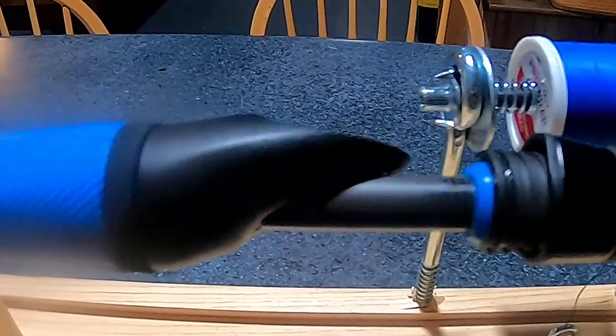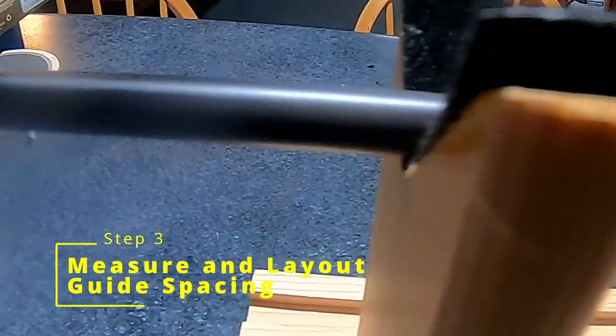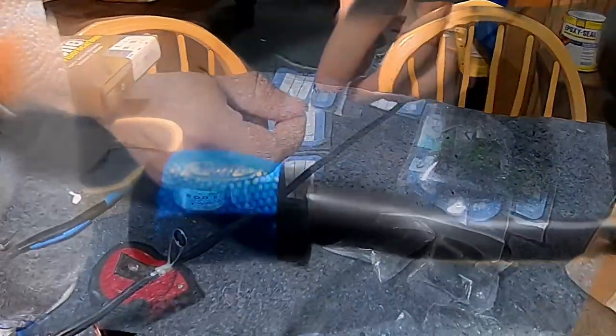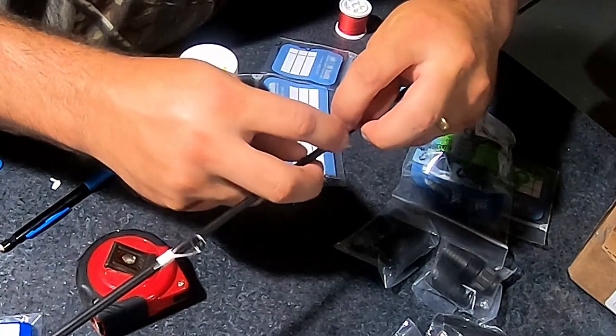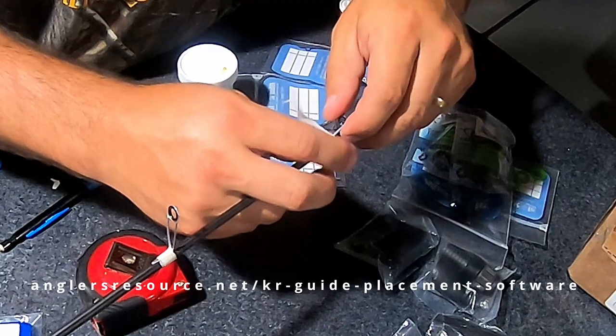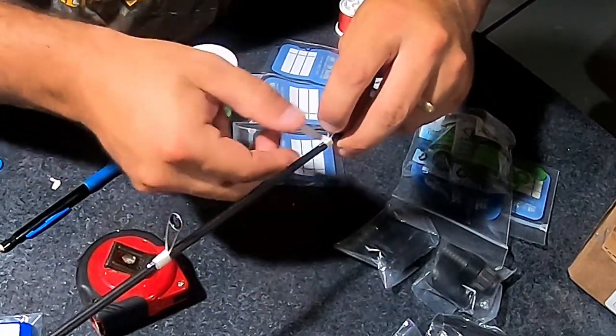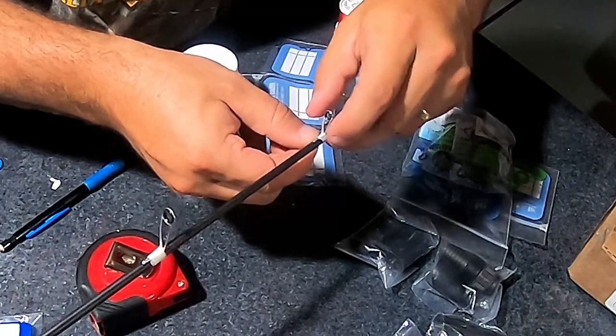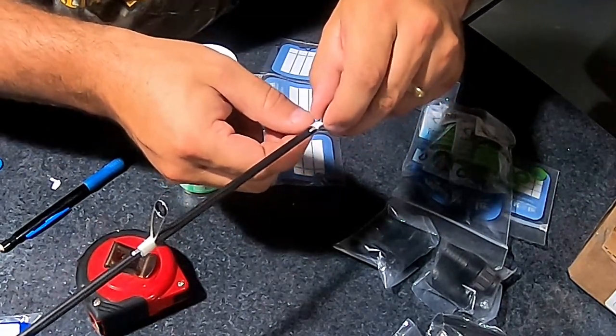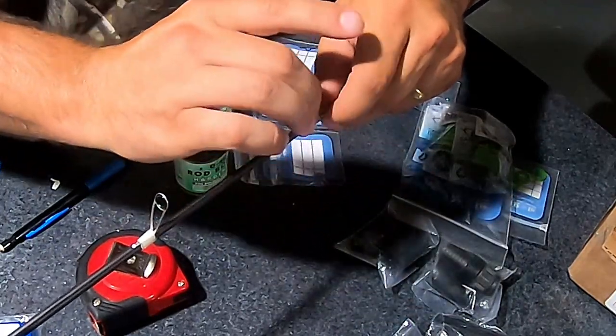We've got our reel handle done. Next step is the guides. I'm using a Fuji KR Concept series of guides on this rod, so I'm going to use the KR Concept guide software. I'll flash that across the screen. You can also just Google that. Any similar style of rods will work with that. If you're using a very different style, you might want to look up a guide placement chart. Most guide series will have a guide placement chart that you can look up for those guides.